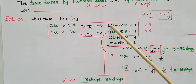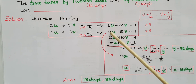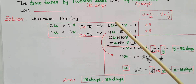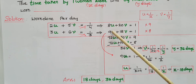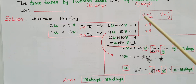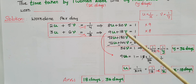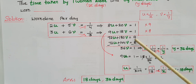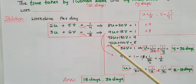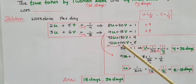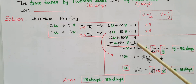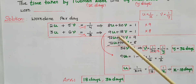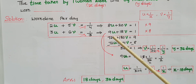To eliminate u, multiply the first cleared equation by nine and the second by eight. This gives: seventy-two-u plus 180v equals nine, and seventy-two-u plus 144v equals eight. Now subtract the second from the first to eliminate the 72u terms.